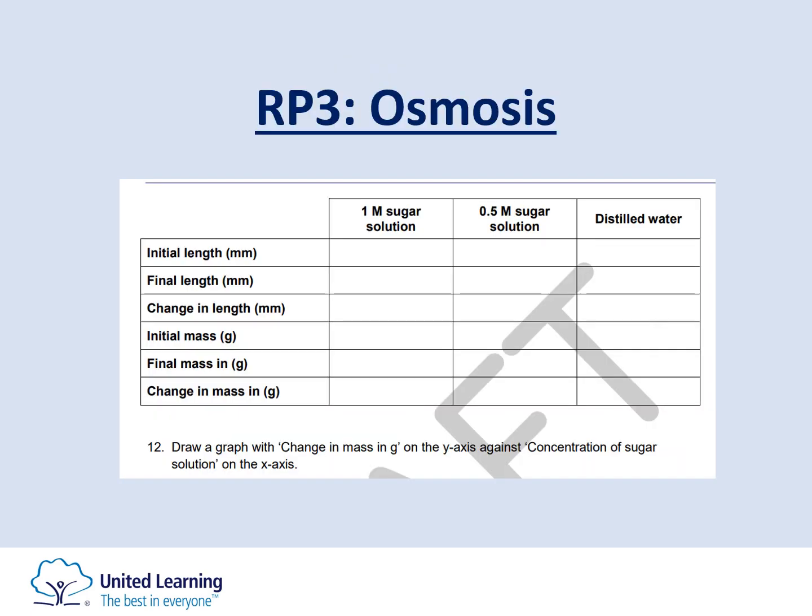When recording results, you record the initial length and final length for each of the three solutions, then measure the change. This uses the percent change equation: take the final length minus the initial length, divide by the initial length, then multiply by 100. The same equation applies for initial and final mass when working out the percent change in mass for each solution.